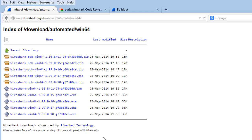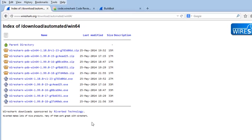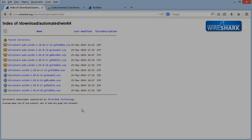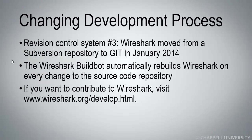Let's look at a little bit of information regarding the development process of Wireshark. Wireshark is on its third revision control system. Just in January 2014, Wireshark moved from the Subversion repository over to Git. Prior to that, we used to have version numbers such as 1.10.2 and then there would be an SVN number behind it. But now we're in the Git system as of January 2014.